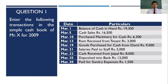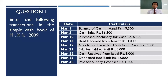In this session we've been given a question: enter the following transactions in a simple cash book of Mr. Expert 2009. We've been asked to prepare a simple cash book. Please remember, a single column cash book is also called a simple cash book — it has only one column and is very straightforward. We've been given nine transactions to enter into the single column cash book.